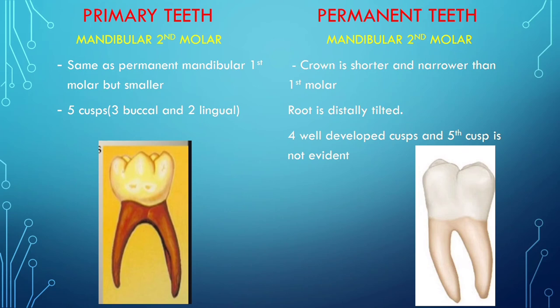There are five cusps in the primary mandibular second molar, while the root is distally tilted and four well-developed cusps are present in the mandibular second molar of permanent dentition. The fifth cusp is not evident in permanent.